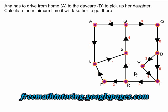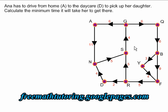In this diagram, which is given with the question, each of these black lines represents a street, and the arrows tell you which direction the street goes — so they're all one-way streets. The little red numbers tell you how many minutes it takes to get from one vertex along that street to the next vertex.